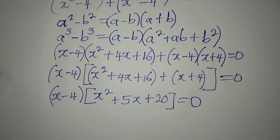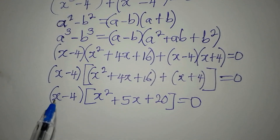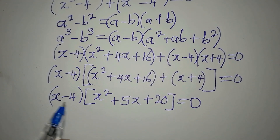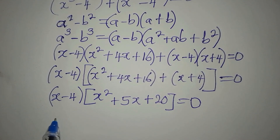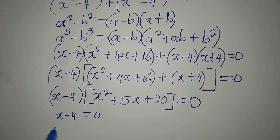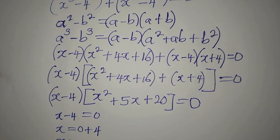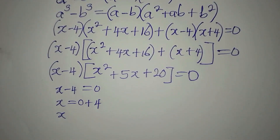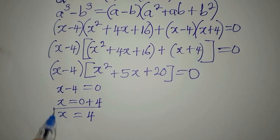We have two factors whose product is zero, so either of them is zero. From (x minus 4) equals zero, x is equal to positive 4. That is one of the solutions.